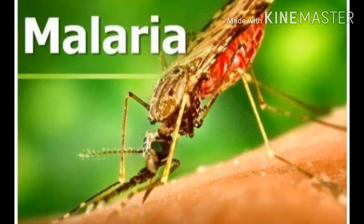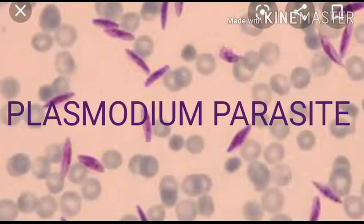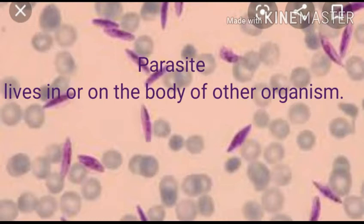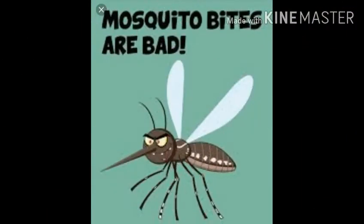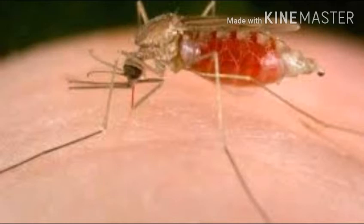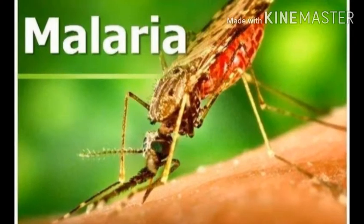These germs are called plasmodium parasite. A parasite is an organism that lives in or on the body of another organism. These plasmodium parasites live inside the female Anopheles mosquito. When the female Anopheles mosquito bites a human, these germs enter into the human body. In this way, we get malaria.